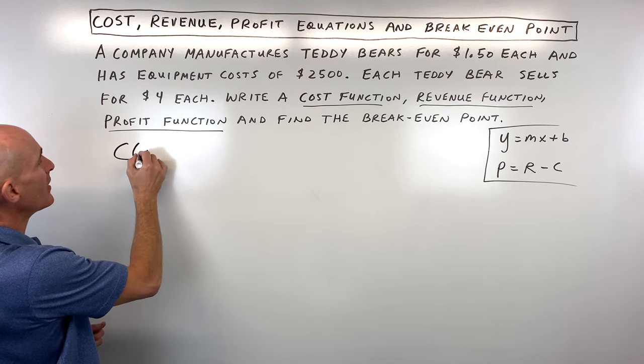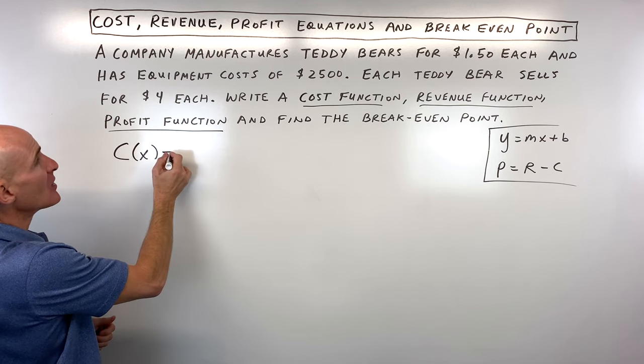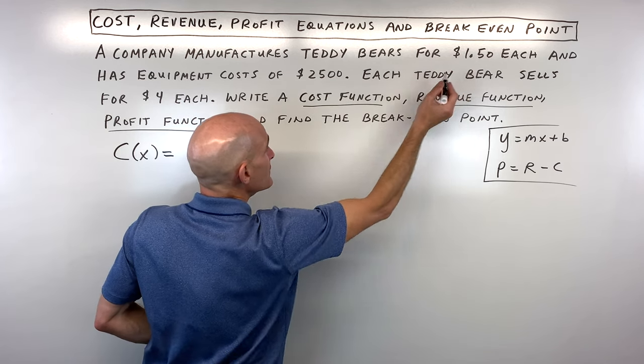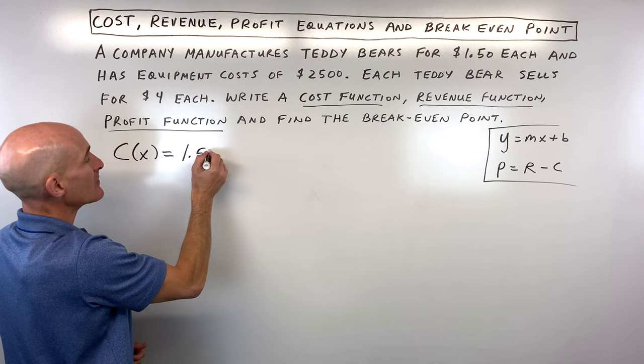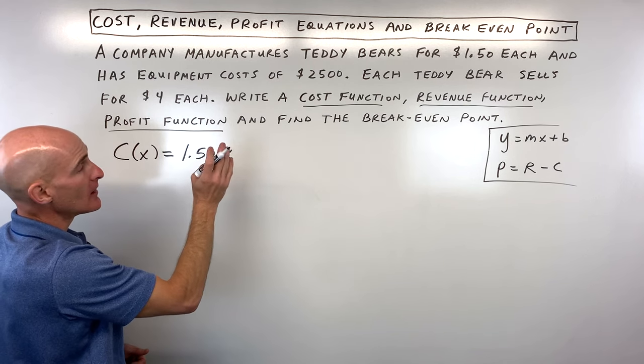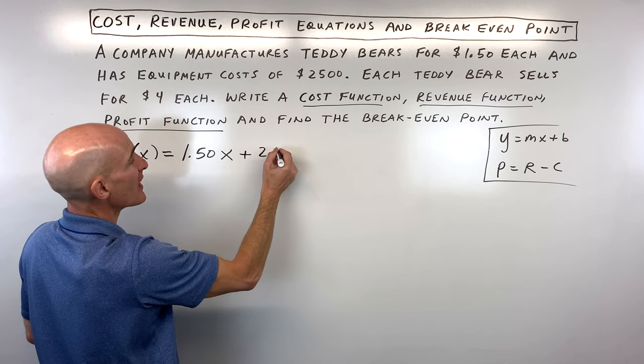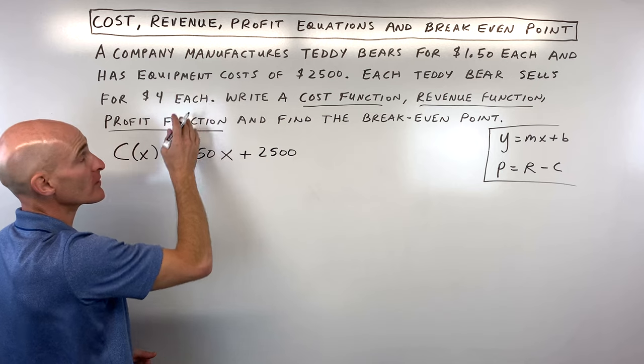So for the cost, let's say C of X, where X is the number of teddy bears sold, it's going to cost $1.50 times X, the number of teddy bears that you're making or manufacturing, plus it also costs you the initial expense of the $2,500 for the equipment.